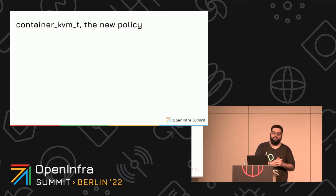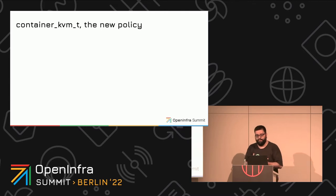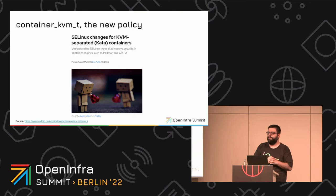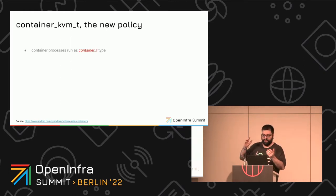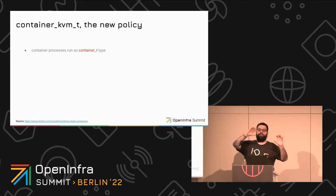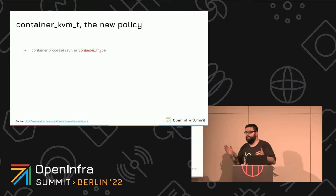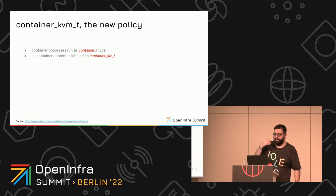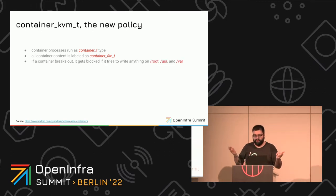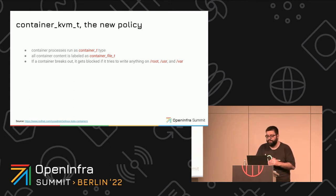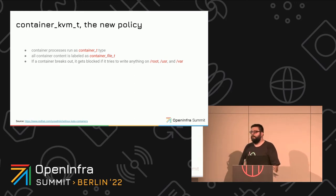In order to ensure this for Kata Containers, a new policy had to be created. Dan Walsh from Red Hat — known as Mr. SELinux — created a policy called container_kvm_t. The whole idea is we take the container_t policy, which is what containers should be using and is very restrictive, and we expand it slightly to allow whatever a VMM and VirtioFS daemon need to do for Kata Containers. The container_kvm_t label can access everything with the container_file_t label, and if a container breaks out and tries to write to /root, /usr, or /var, it has no permissions to do so.